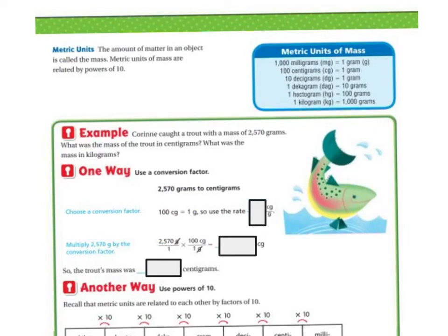Now we're getting into the metric system. The metric system is great because you're multiplying by powers of 10. That just simply means moving the decimal over, which is pretty cool. You're going to use this chart right here to help you. Remember, you're going up and down by powers of 10. Our example is: Karina caught a trout with a mass of 2,570 grams. What was the mass of trout in centigrams? What was the mass in kilograms?